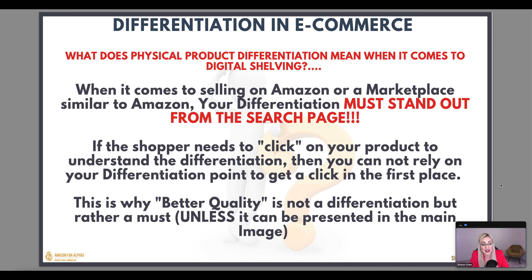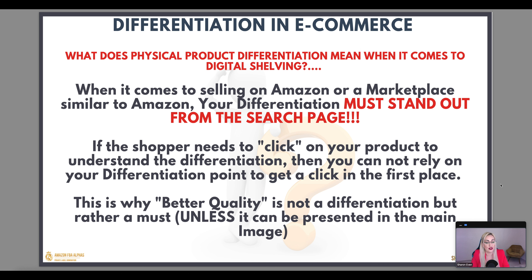They have to be able to understand what's different about your product — your differentiation, or what some call your USP, unique selling proposition. If the shopper needs to click on your product in order to understand the differentiation, then you cannot rely on that differentiation point to get the click in the first place. This is why better quality is not a differentiation point, but rather a must — unless it can be presented in the main image.